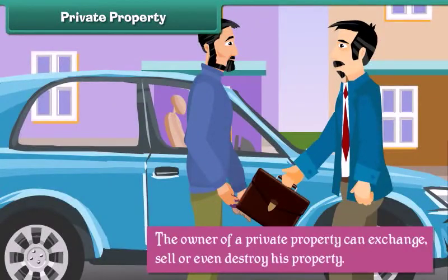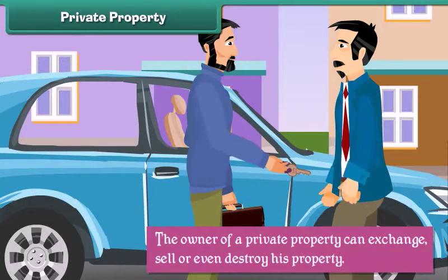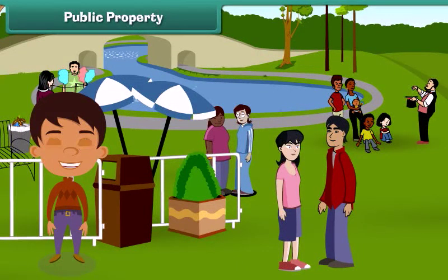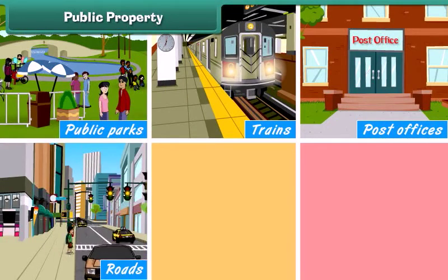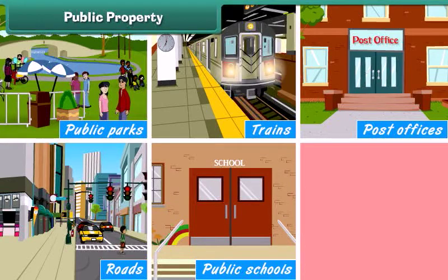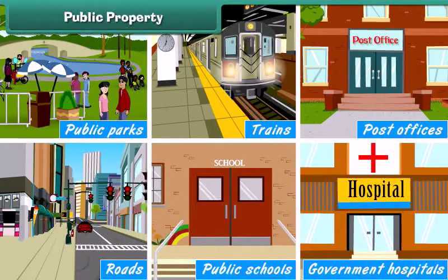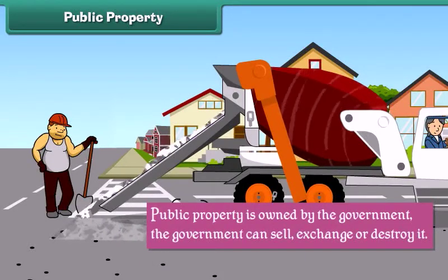The owner of a private property can exchange, sell, or even destroy his property. Public property is property owned by the government; such property is meant for the welfare of the people. It is available for public use, and all people of the country have equal right to use it. Public parks, trains, post offices, roads, public schools, public colleges, and government hospitals are all public properties.